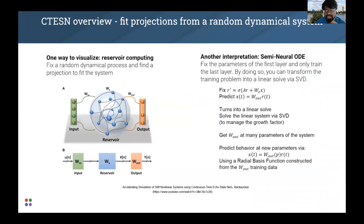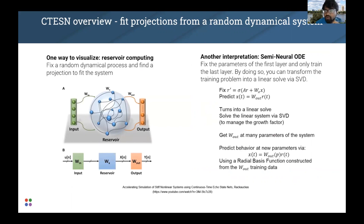The way you do this using continuous time ecostate networks is you define a fixed, non-stiff dynamical system called the reservoir, and you calculate projections from this reservoir time series to your reference time series from your original system. Once you get this projection at various points in the input space over which you want your surrogate to work, you can construct a map between your input space and the space of projections. A prediction then simply involves finding the right projection and simulating your original fixed dynamical system, which is cheap to simulate. This fixed dynamical system is what we're calling a reservoir.